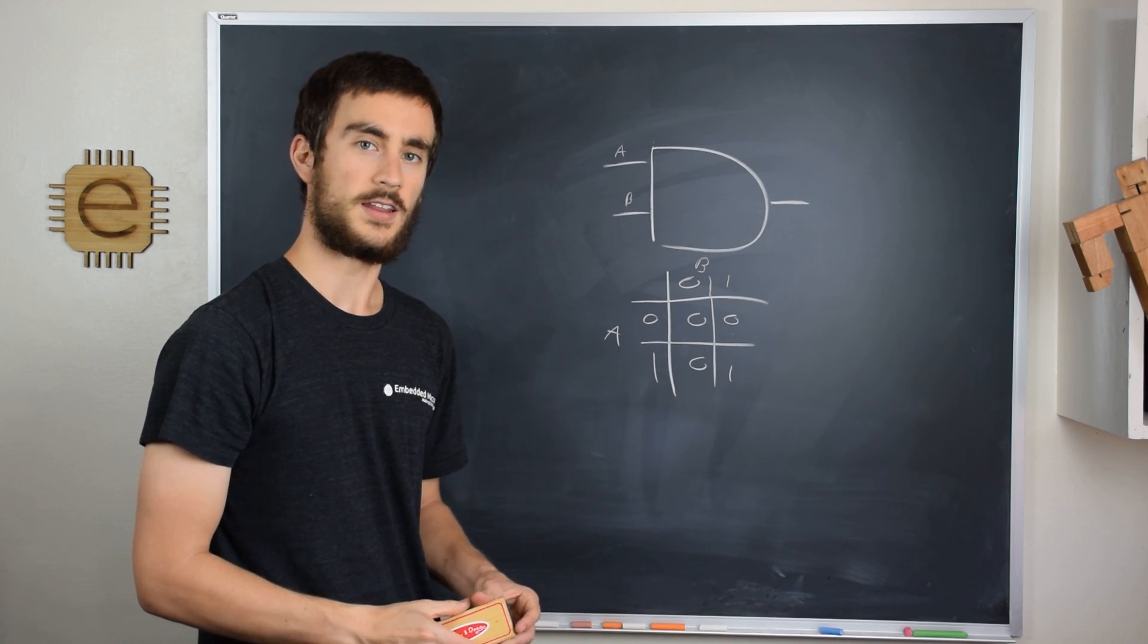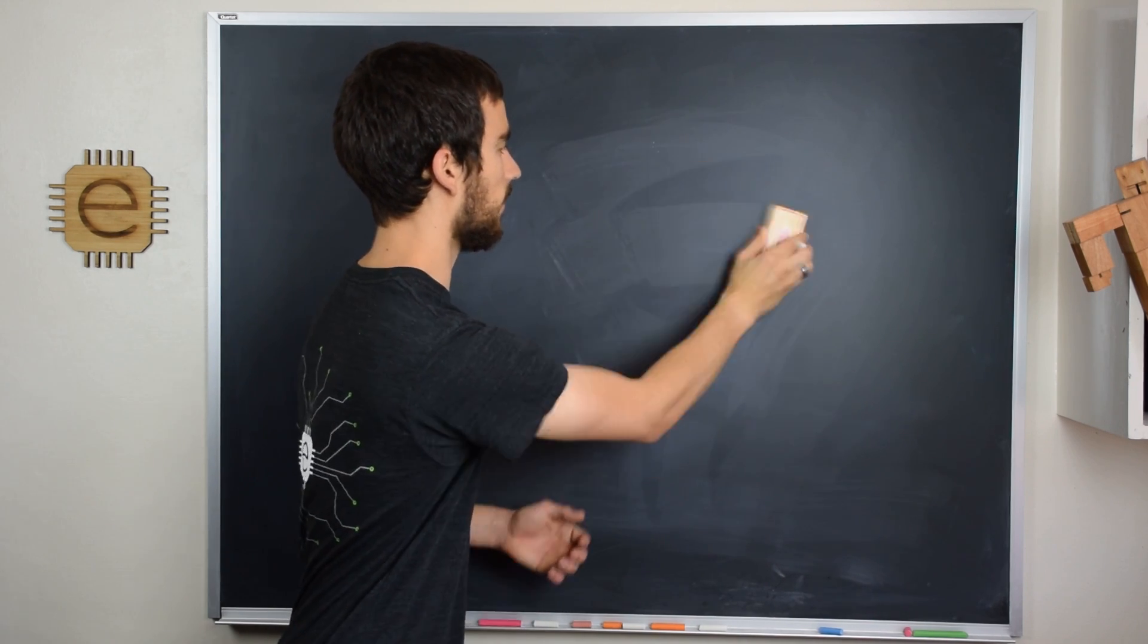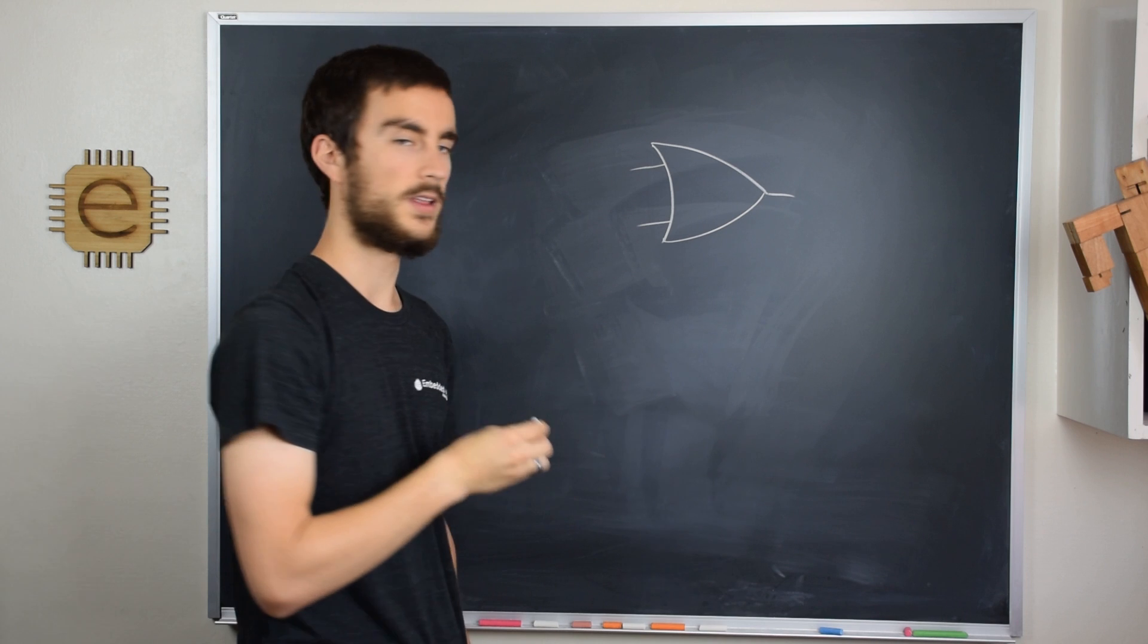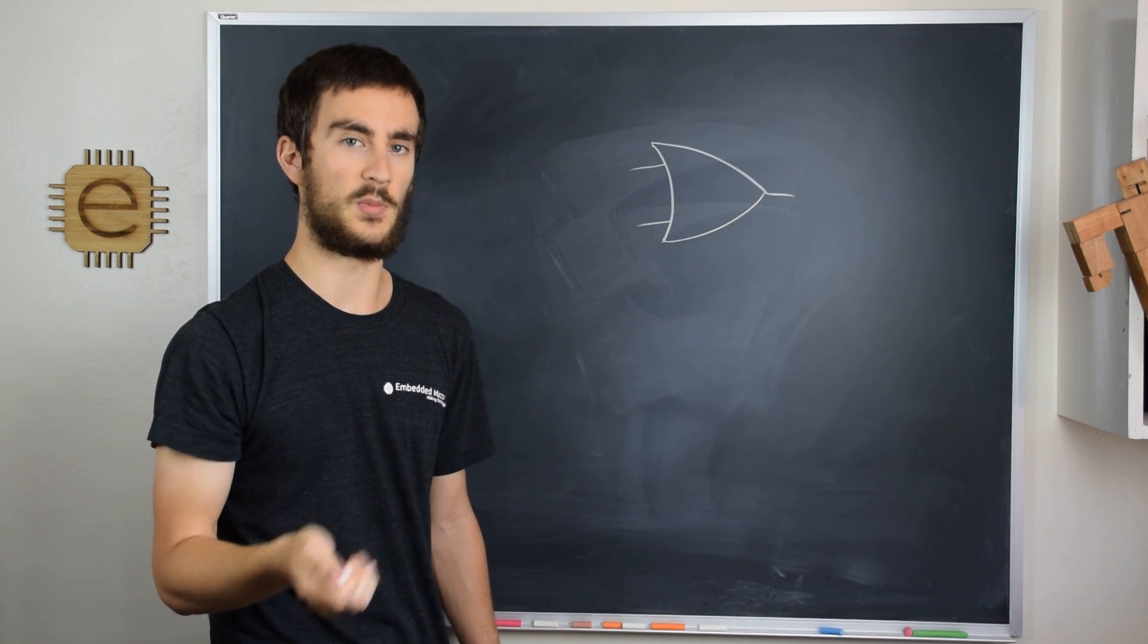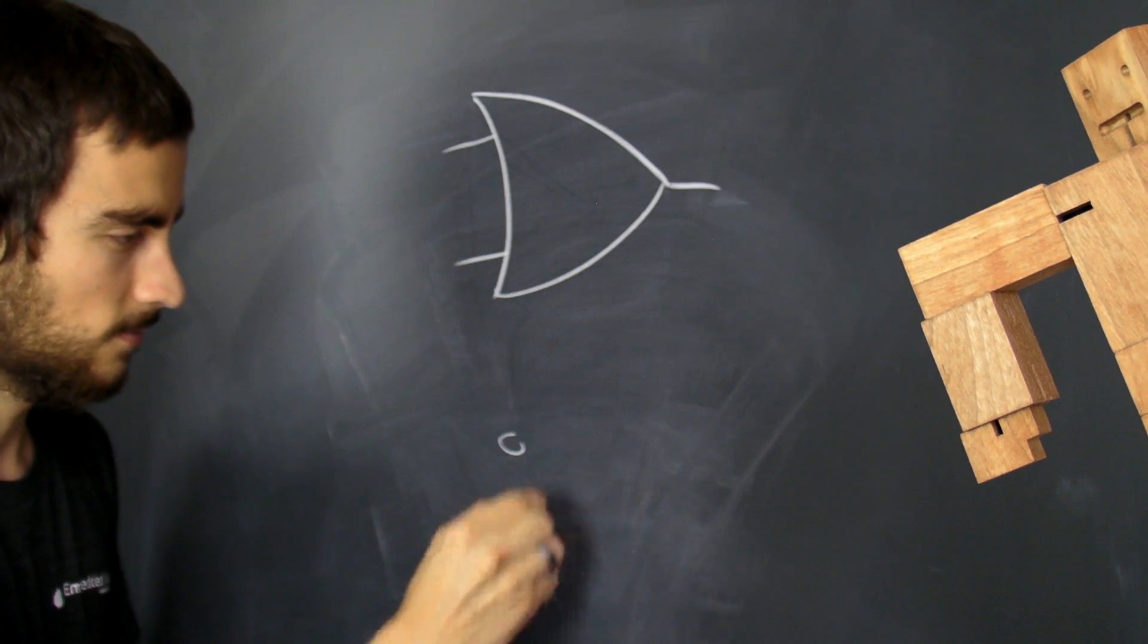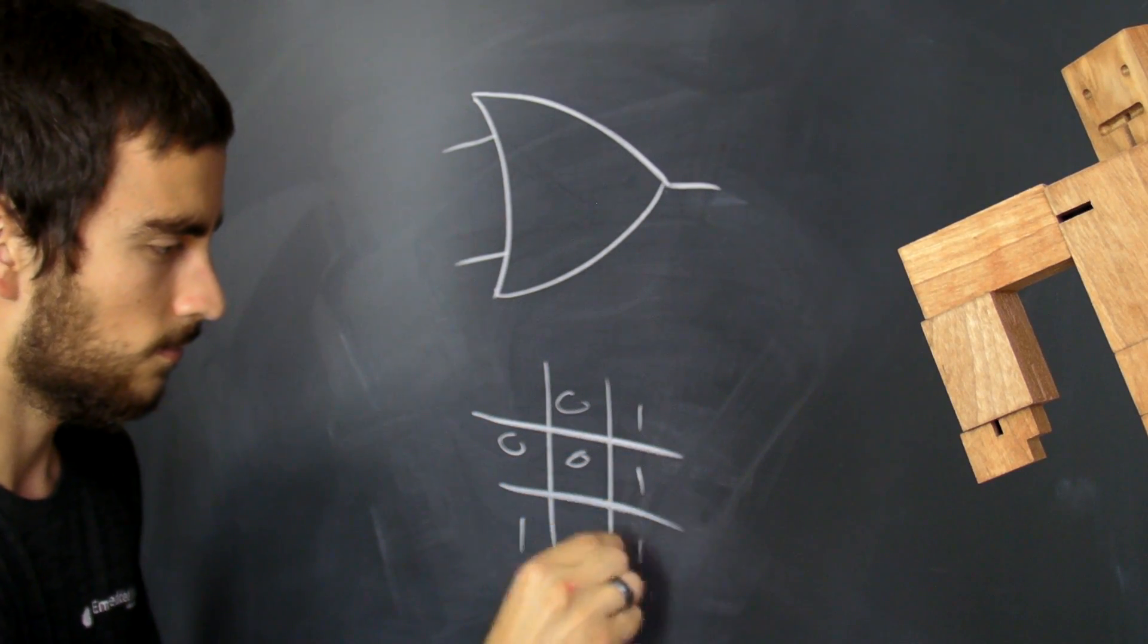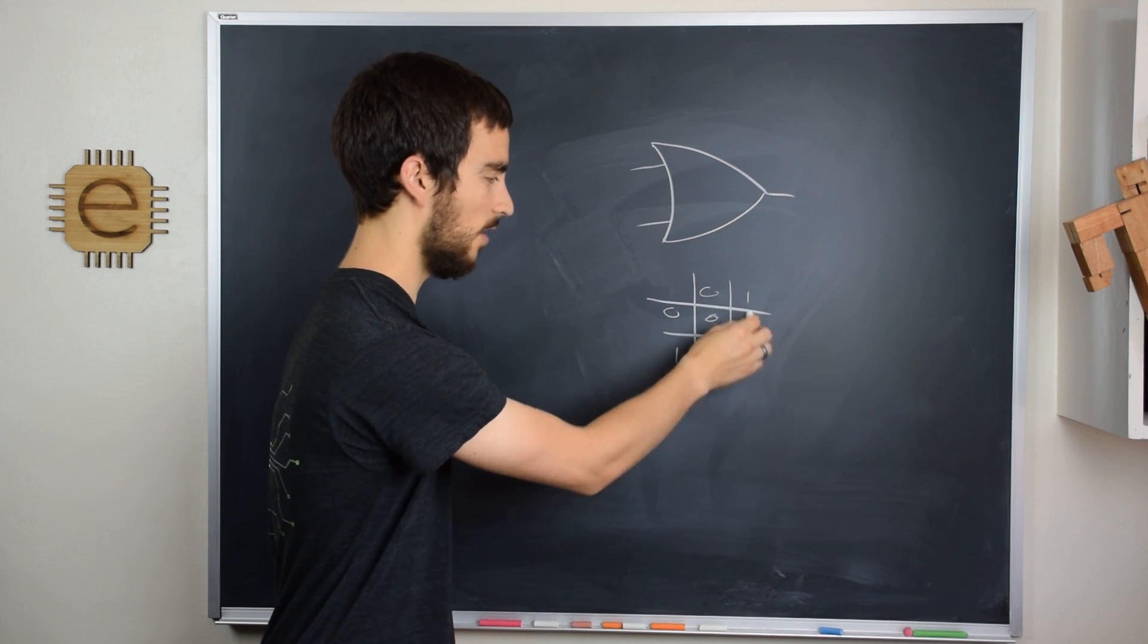The next gate we're going to look at is the OR gate. An OR gate has a symbol that looks like this. And what it does is when either of the inputs is 1, it'll output a 1. Otherwise, it'll output a 0. So it has a truth table that looks like this. When either one of these inputs are 1, the output is 1.